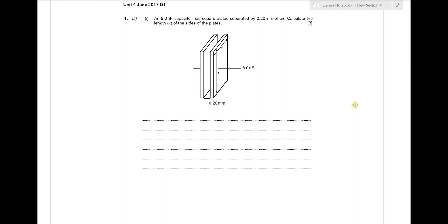The question talks about a parallel plate capacitor which has a capacitance of 8 nF and the plates are separated by 0.2 mm of air. We're asked to calculate the length of the size of the plates. So let's start with C equals epsilon 0 A over D, which is our formula for the parallel plate capacitor.